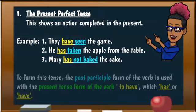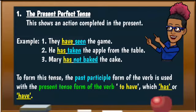Now if we look at these sentences, to form the present perfect, the past participle form of the verb — like see, take, and bake — we use with the present tense form of the verb 'to have,' which is 'has' or 'have.' Remember, with plural nouns or pronouns we use the verb 'have,' and with singular nouns or pronouns we use the verb 'has.'